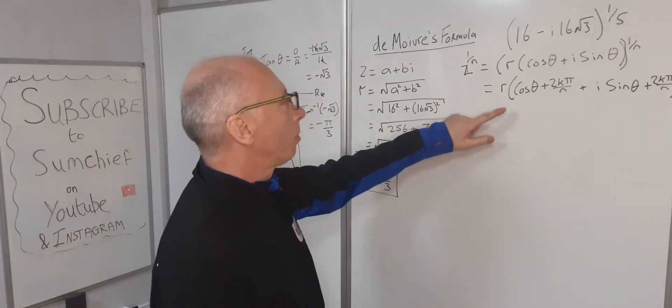For k = 2: we get 2·cos(−π/3 + 4π/5). So that's −5/15 + 12/15, giving us 7/15. So minus 5 plus 12 is 7 over 15. The solution is 2·(cos(7π/15) + i·sin(7π/15)).